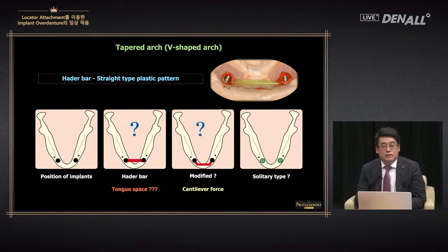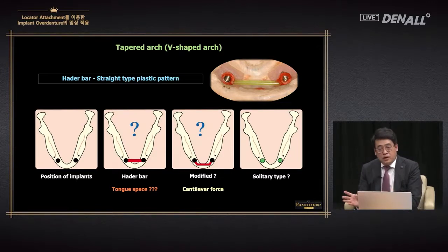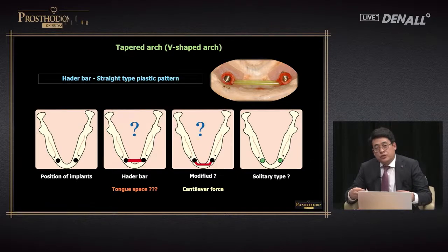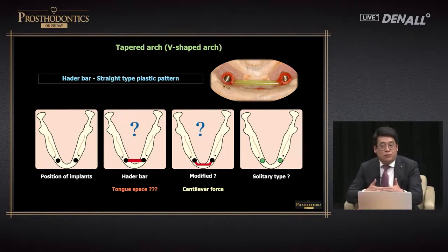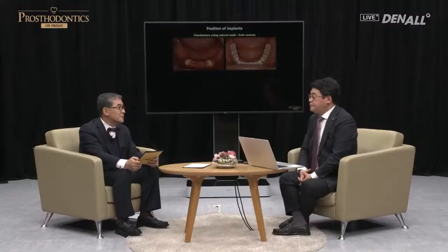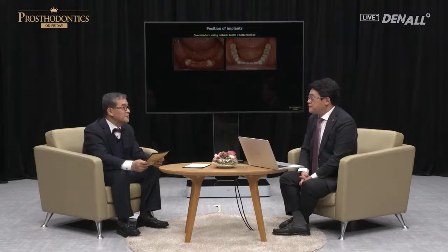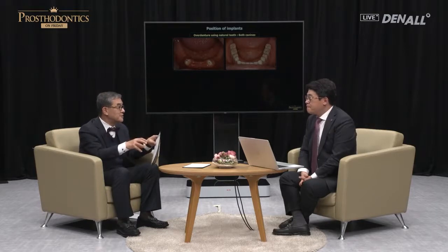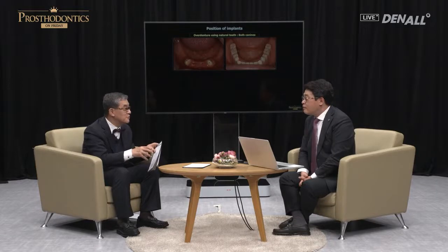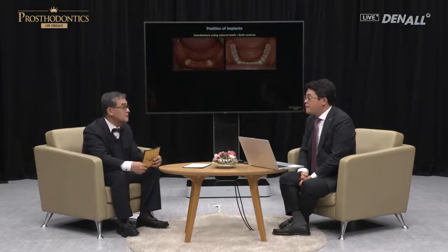Arch shape can be divided into V-shape, U-shape, and oval shape. When the arch is V-shaped and we place the implant in the canine area, in the case of solitary type a virtual fulcrum line is formed and the anterior cantilever becomes elongated. Therefore you need to place the implant in a different position. For V-shape, it is better to place it in the lateral incisor. In general, dentists prefer to place it in the canine because most arches are oval or square rather than V-shape.